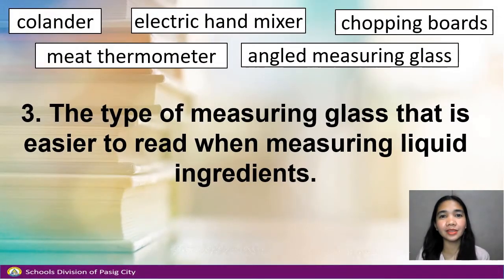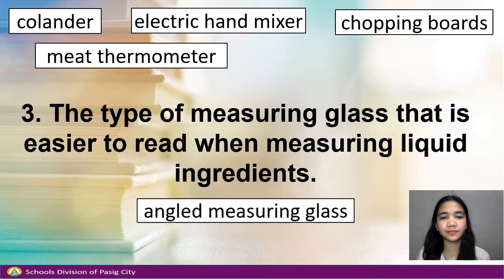Number 3. The type of measuring glass that is easier to read when measuring liquid ingredients. Answer: Angled measuring glass.